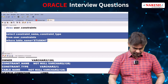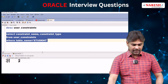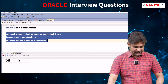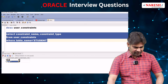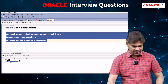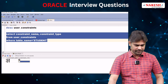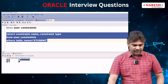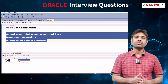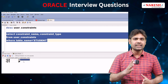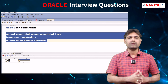Execute this query. It is displaying the constraints information. Constraint names are C1 and C2. For C1, it is displaying P — P means primary key. For C2, it is displaying C — C means check. So this is the way of seeing the list of constraints of a particular table.